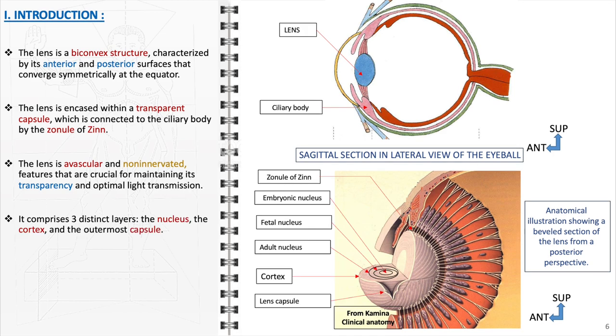The lens comprises three distinct layers: the nucleus at the center, the cortex surrounding the nucleus, and the outermost capsule. The nucleus is the oldest and hardest part, while the cortex is softer and contains newer fibers. The capsule, being the outer layer, serves as a protective barrier and maintains the overall integrity of the lens.